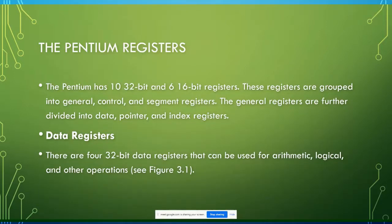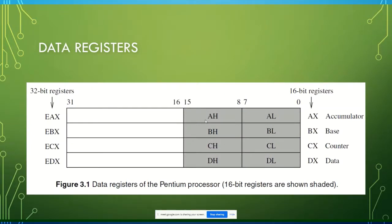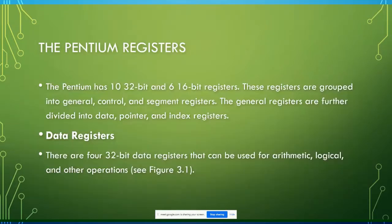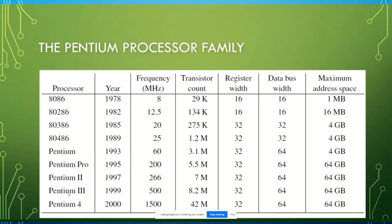They just increased the capacity, efficiency, memory management, width of the data bus, address bus, register width, and internal architecture. But the basic components inside each processor are more or less the same. So if you know Intel Architecture well for any one of them, it's quite enough. Pentium registers, more or less, are mostly the same across the series. The number of transistors may differ, but the internal architecture remains consistent.